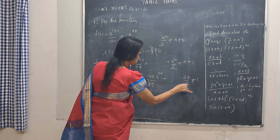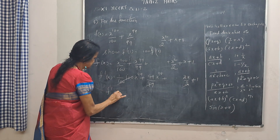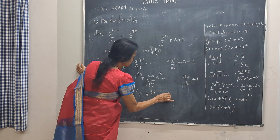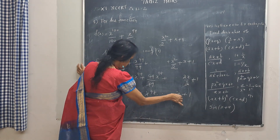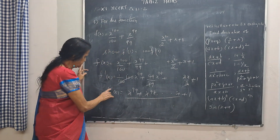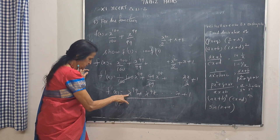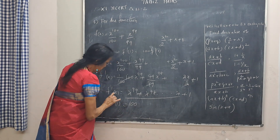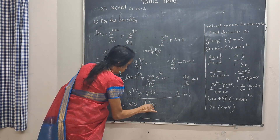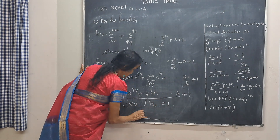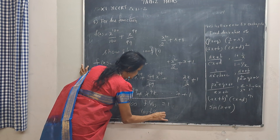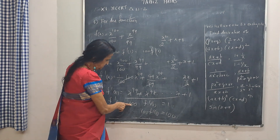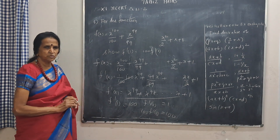The terms cancel out, so f dash(x) simplifies. Now f dash(1) equals 1 plus 1 plus 1 plus 1, giving 100 terms summing to 100. And f dash(0) equals 0 plus 0 plus ... plus 1, which is 1. So 100 times f dash(0) is 100 into 1, which equals 100. Therefore f dash(1) equals 100 and 100 into f dash(0) is also 100, so both are equal.